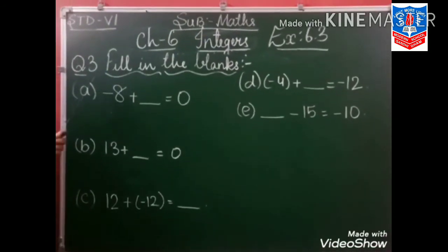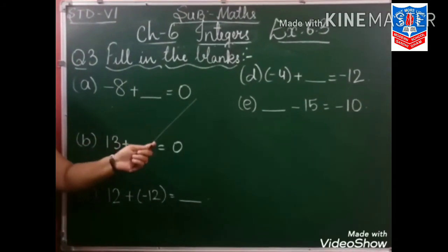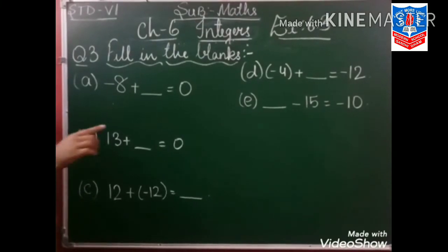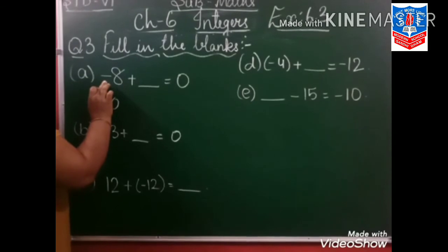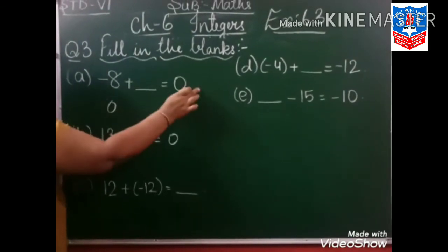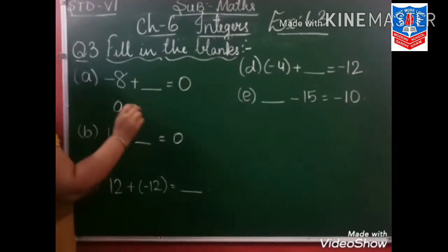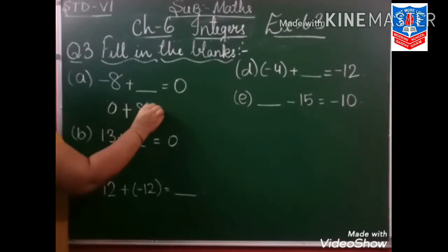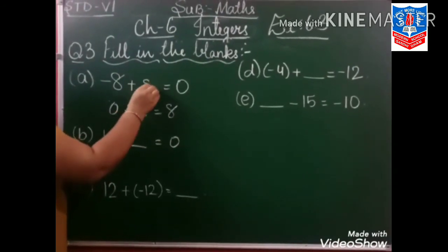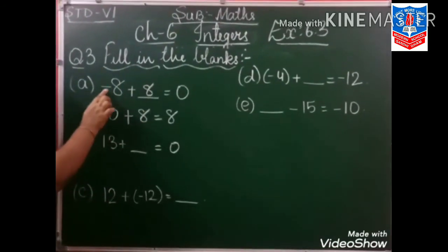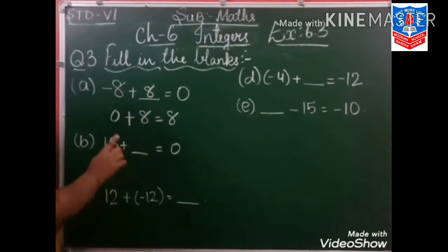Question number 3: fill in the blanks. Minus 8 plus dash is equal to 0. How you will find the answer? You will shift minus 8 to the other side, then this minus 8 will become plus 8. So 0 plus 8 is 8 — our answer is 8. Now verify: minus 8 plus 8 — minus plus minus, 8 minus 8 is 0. Correct.